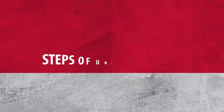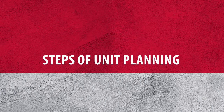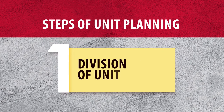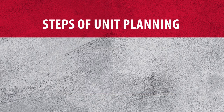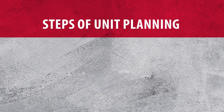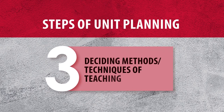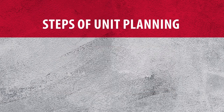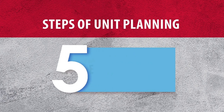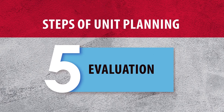How can you develop a unit plan? The first step is division of the unit into concepts and sub-concepts. The next step is to identify the learning outcomes for each unit. When you identify the learning outcomes, you decide what type of method and technique you will apply in teaching-learning. You also plan how you will interact with your learner and how you will assess or evaluate their performance.